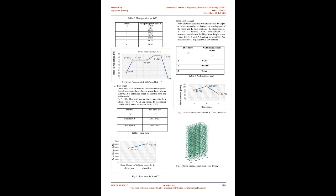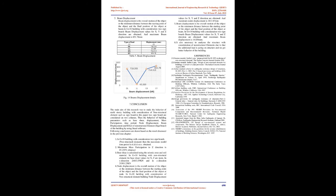Node displacement is the minimum distance between the starting point and the final position of the object at a node. In G+18 building with consideration of 2 signboards, node displacement values for X, Y, and Z directions are obtained, with maximum nodal displacement of 106.169 mm. Beam displacement is the overall motion or minimum distance between the starting and final position of the object at a beam. In G+18 building with 2 signboards, beam displacement values for X, Y, and Z directions are obtained, with maximum beam displacement of 851.78 mm.